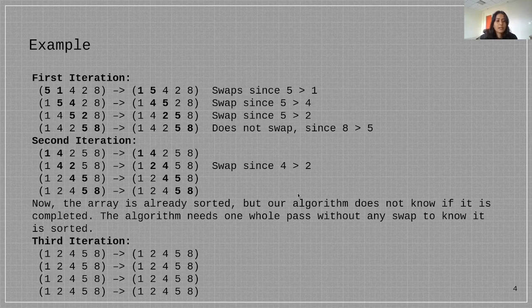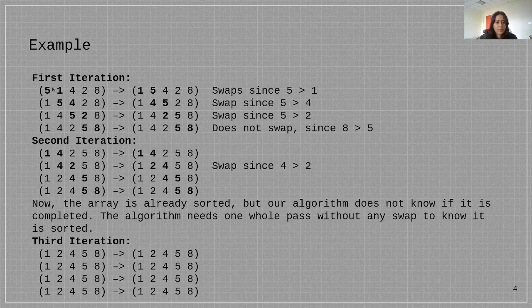This is an example. In the first iteration we have 5, 1, 4, 2, 8 and we swap 5 and 1 because 5 is greater than 1. Then we get 1, 5, 4, 2, 8 and we swap 5 and 4 as 5 is greater than 4.